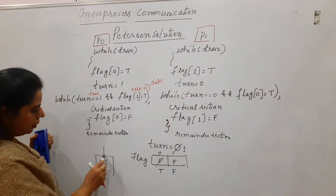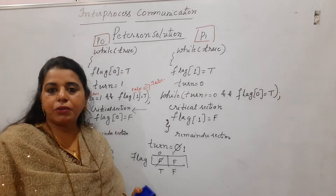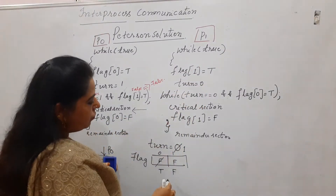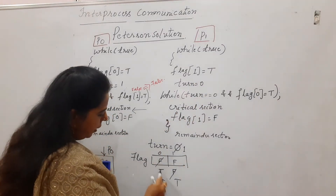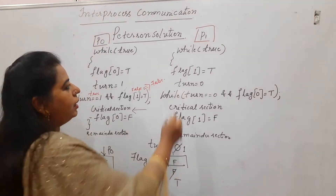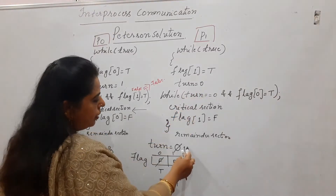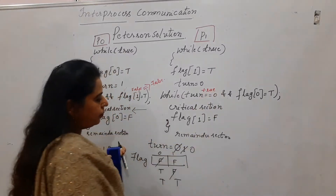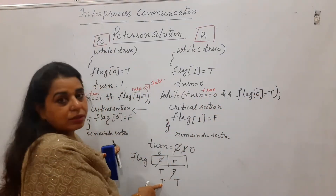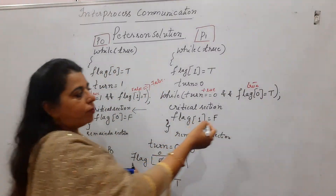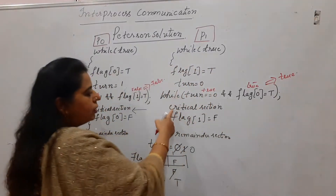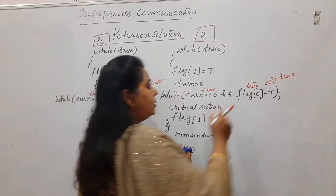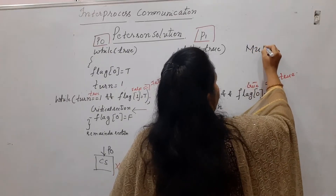Since the while loop condition is false, P0 can enter the critical section. Now we do a context switch to test P1. P1 sets its flag to T and sets turn equal to zero. P1 checks the while loop: turn equals zero — true; flag of P0 is T — true. True AND true is true, so P1 cannot enter the critical section. This confirms mutual exclusion is satisfied.